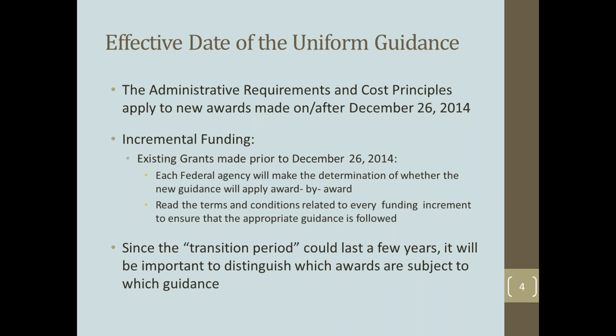This means we've been operating under the new guidance as well as the old guidance during the transition period for more than a year. This is one of the first challenges we as a state had to face. We had to talk with our cognizant agencies and grantor agencies to figure out which awards were subject to which guidance. Since many of our grant awards span several years, our program fiscal officers have to read the related terms and conditions every time there's an incremental award or an increase in funding. We recommended creating unique program codes and program periods to help with the issue of identifying incremental funding.